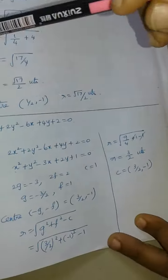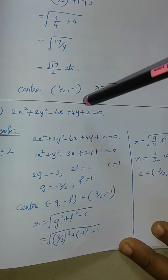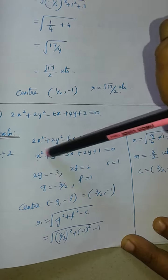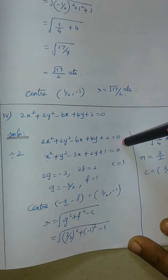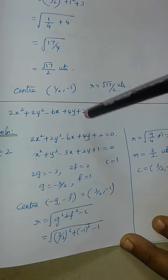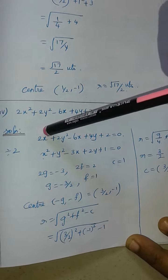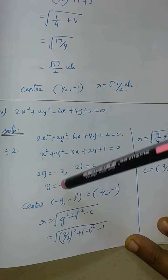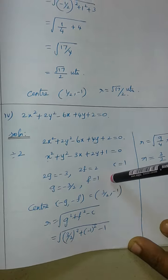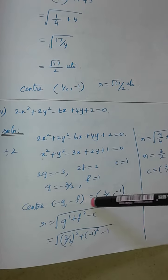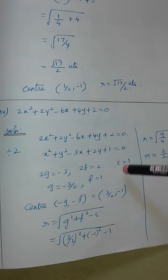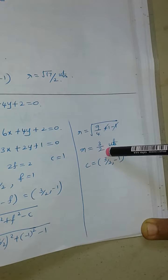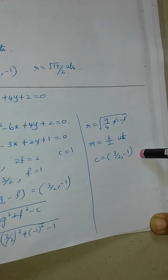The fourth sub-question: x and y coefficients are equal to 1. We divide the entire equation by 2. After dividing by 2, we compare: 2g is equal to 3, then g is equal to minus 3 by 2. 2f is equal to 2, so f is equal to 1. The center formula gives (minus g, minus f), which is (3 by 2, minus 1). The radius formula gives root of 3 by 2 square plus 1 minus 1, so 9 by 4, giving radius 3 by 2.